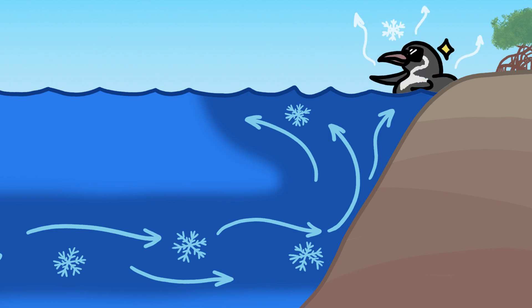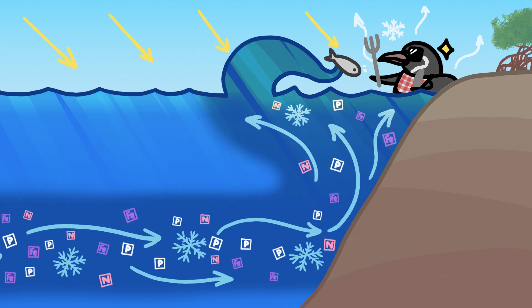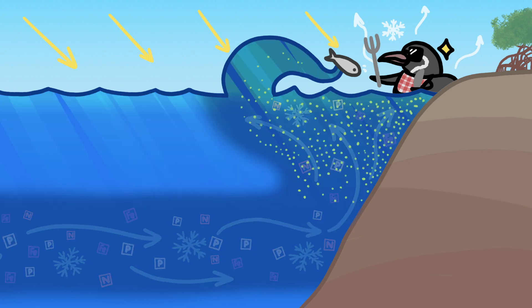The current helps the penguins stay cool, but even more importantly, it helps them eat. That's because it brings together nutrients and sunlight, the key ingredients that make green algae thrive, which allows penguins' food to thrive too.